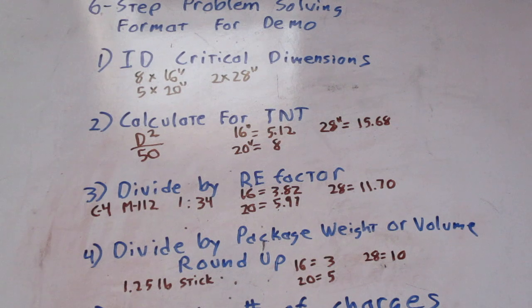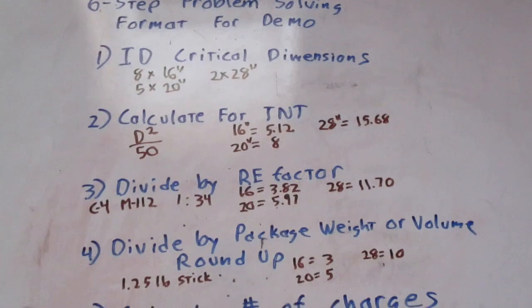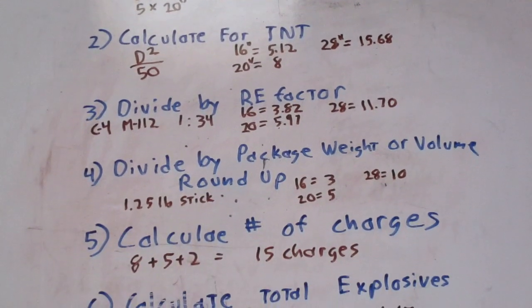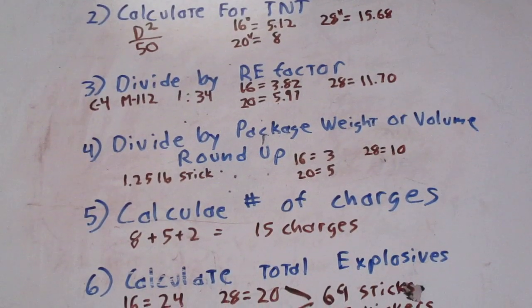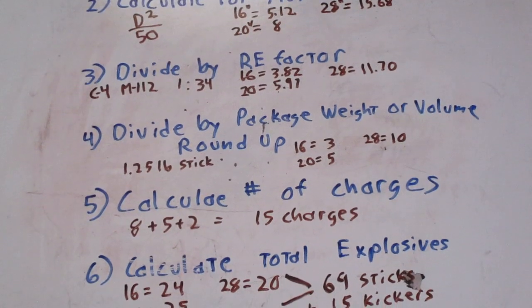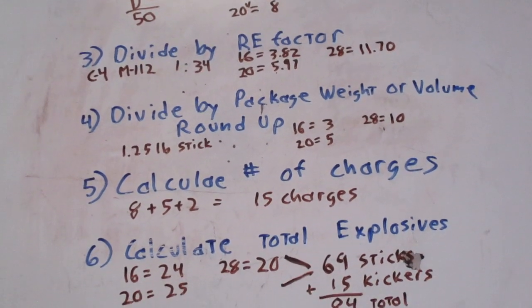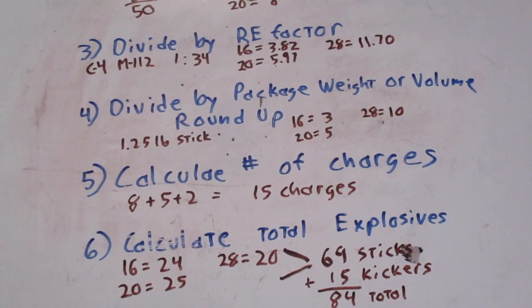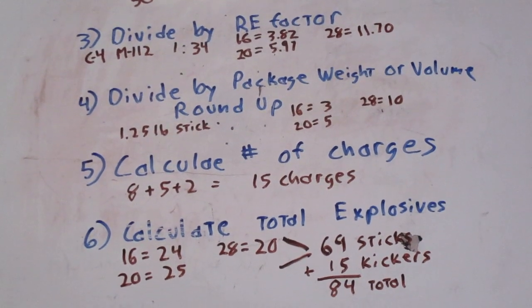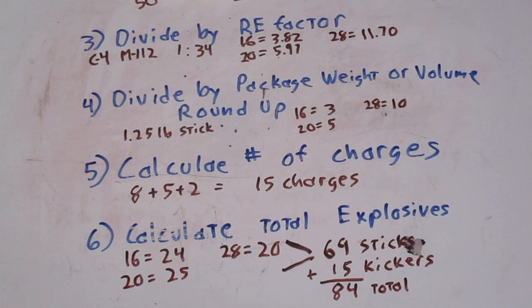Step one, identify the critical dimensions. Step two, calculate for TNT. Step three, divide by RE factor. Step four, divide by package weight or volume and round up to the next whole package. Step five, calculate the number of charges required. And step six, calculate the total explosives.